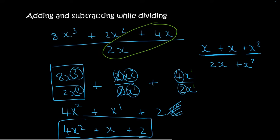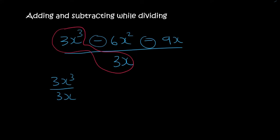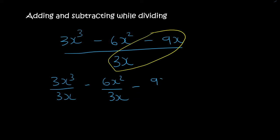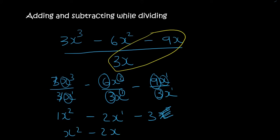Let's practice a lot of these. We've got minuses in between, so what we do is isolate. We take this one — so that will be 3x³ over 3x — then minus 6x² over 3x, and then minus 9x over 3x. 3 divided by 3 is just 1, then you minus the exponent so you get x². Then 6 divided by 3 is 2, and 2 minus 1 is 1, so it becomes x¹. 9 divided by 3 is 3, and x¹ over x¹ becomes x⁰ which is just 1. So the final answer is x² minus 2x minus 3.